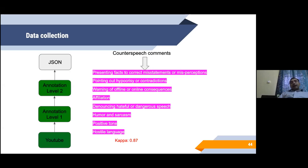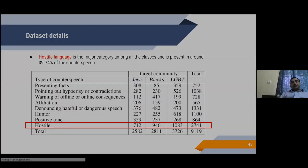In the second stage, we ask the annotators to classify further the counter speech into different types of counter speech. The different types are as I have told earlier, like presenting of facts, pointing of hypocrisy, etc. Here the inter-annotator agreement is 0.87.